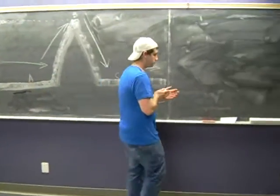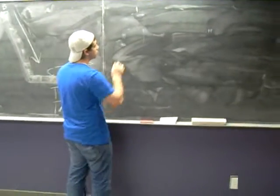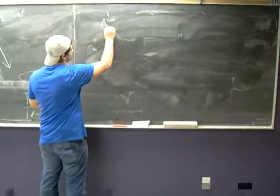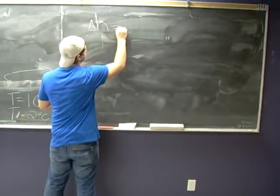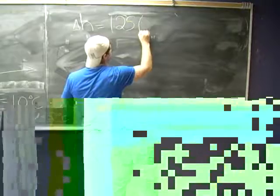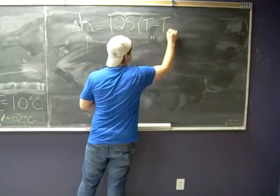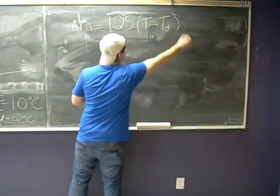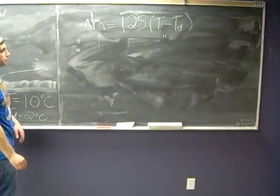First, there are some things we need to consider, though. We need to calculate the height at which air becomes saturated. The use of this formula, delta H is equal to 125 times our surface temperature minus our dew point temperature. This allows us to calculate the height at which air becomes saturated.